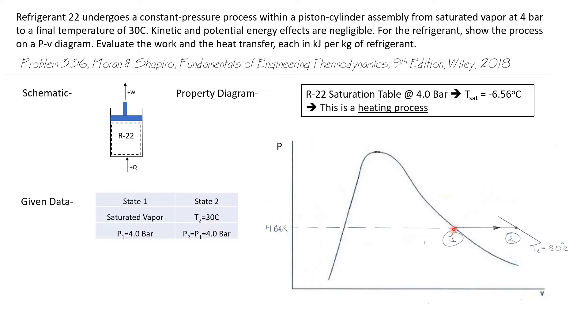We're going to go to the right along this 4 bar line to state 2, which is at 30 degrees Celsius. As you recall on a PV diagram, a constant temperature line goes down to the right. This is our 30 degree Celsius line, and state 2 is right there.